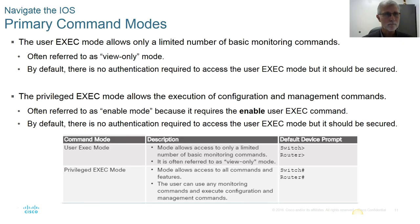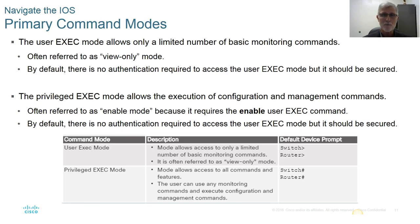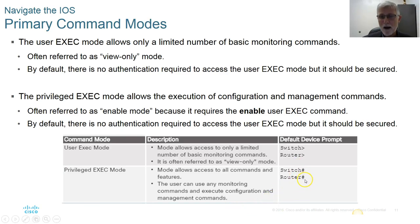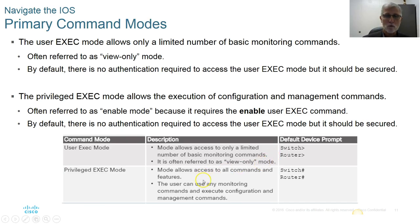If you want to make a change to your device, you need to be in privilege exec mode. How do you tell which mode you're in? When you first log in, you'll see a greater-than sign, which means you're in user exec mode — view only. When you see a pound sign, that means you're in privilege exec mode. To get into privilege mode, you type the enable command at the user exec level, enter the username and password, and your prompt changes to the pound sign.